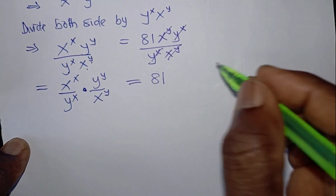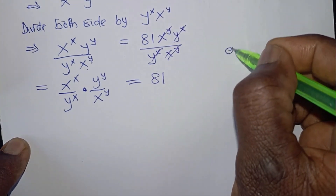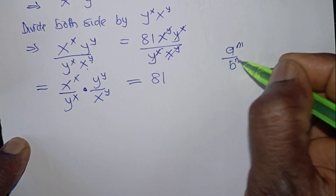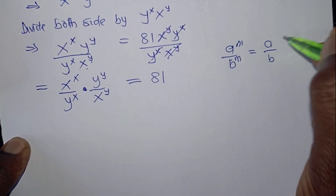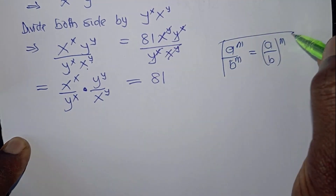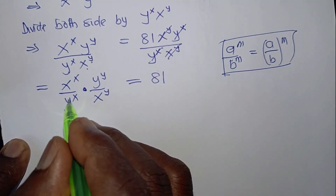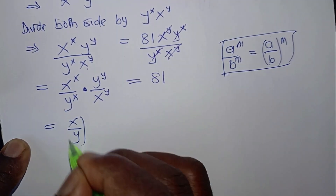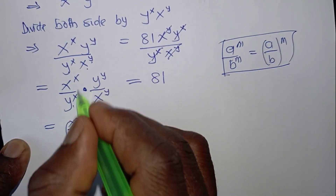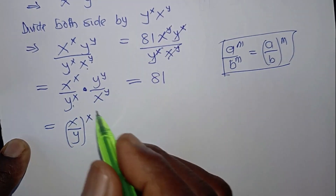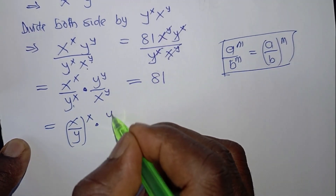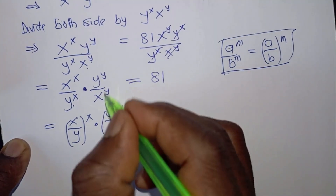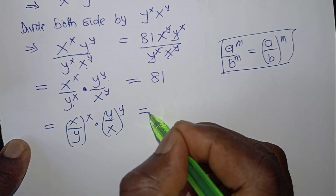We apply this rule: if you have a to the power m over b to the power m, it's equal to (a over b) to the power m. So let's apply this rule here. We can write this as (x over y) to the power x, because both of them have x as an exponent. Multiply — here will give us (y over x) to the power y, because both of them have y as exponent. It equals 81.